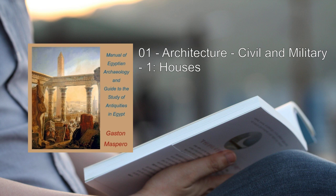The mansions of the rich and great covered a large space of ground. They most frequently stood in the midst of a garden, or of an enclosed court planted with trees, and, like the commoner houses, they turned a blank front to the street, consisting of bare walls, battlemented like those of a fortress. Thus, home-life was strictly secluded, and the pleasure of seeing was sacrificed for the advantage of not being seen. The door was approached by a flight of two or three steps, or by a porch supported on columns and adorned with statues, which gave it a monumental appearance and indicated the social importance of the family.